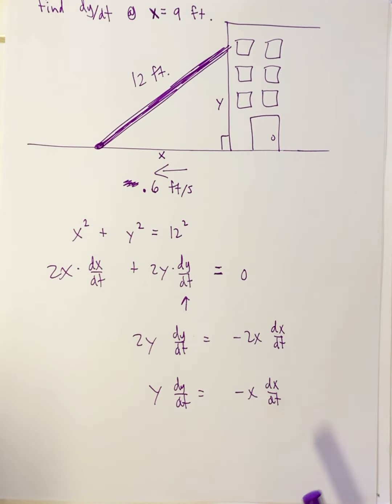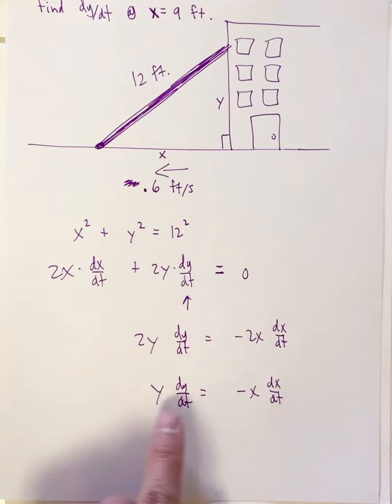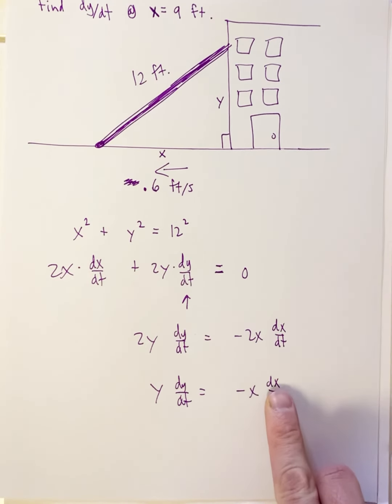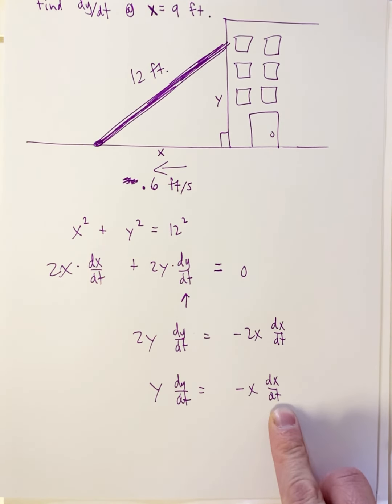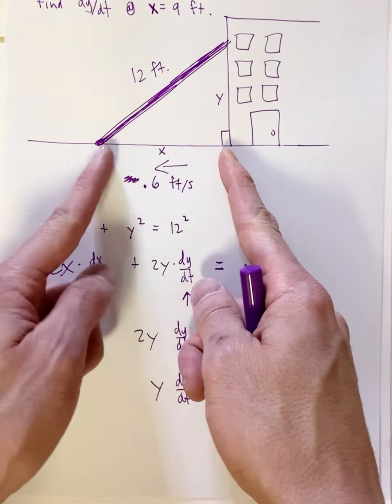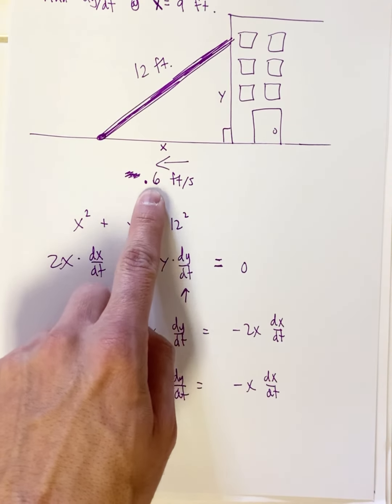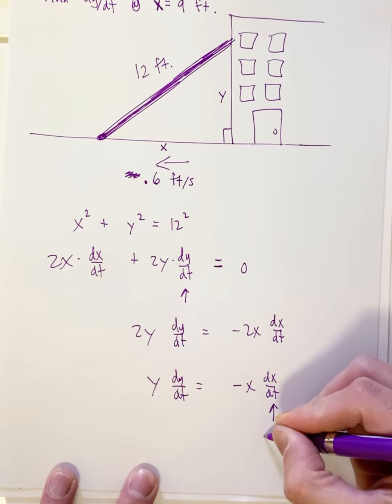Now what are x and y and dx/dt? We know what dx/dt is. dx/dt is how quickly side x is changing. They tell us it's 0.6, so we know that that's 0.6.